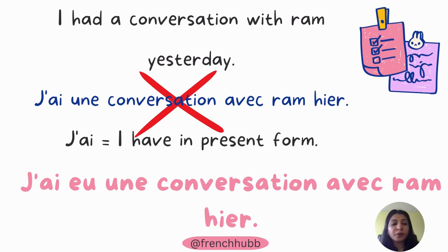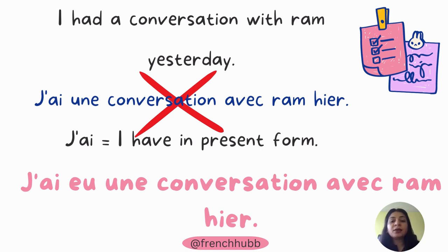Here the main action is avoir — you had a conversation, which was in the past. So no matter what, in simple past tense, the second verb must be the past participle. The correct sentence is 'j'ai eu une conversation avec Ram' — using the conjugation of avoir plus the past participle of avoir, 'eu', and then the rest of the sentence.